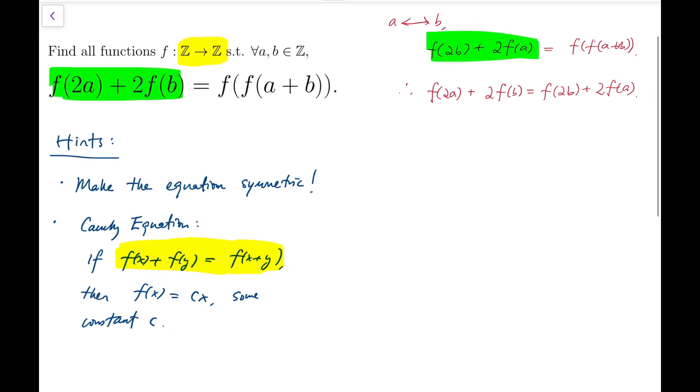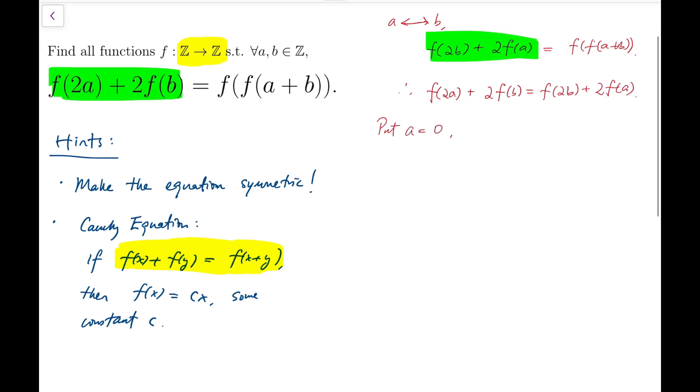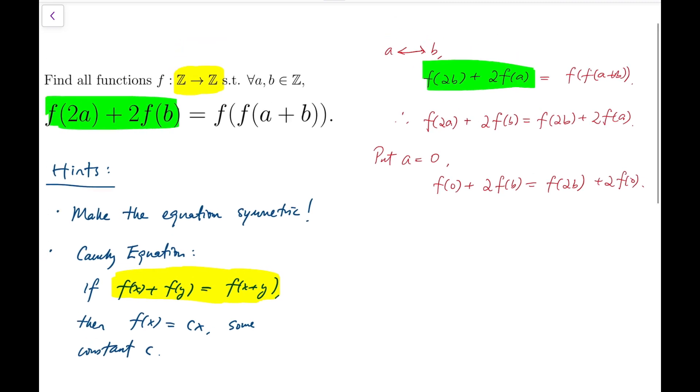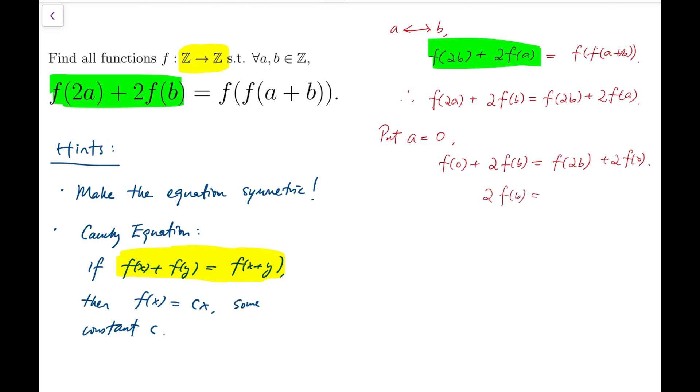Now I can start to plug in some numbers. When a is 0, then f of 0 plus 2 times f of b equals f of 2b plus 2 times f of 0. That means 2 times f of b equals f of 2b plus f of 0. So I can rewrite f of 2b as 2 times f of b minus f of 0. This holds for a as well, so I can take out the two inside f of 2a.